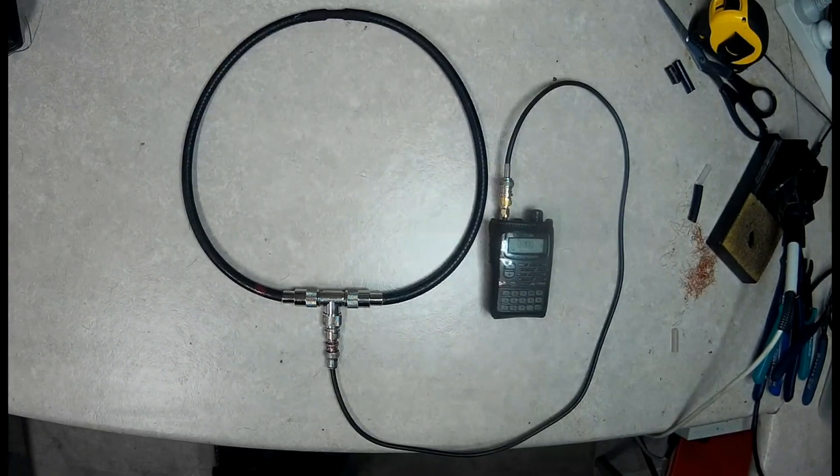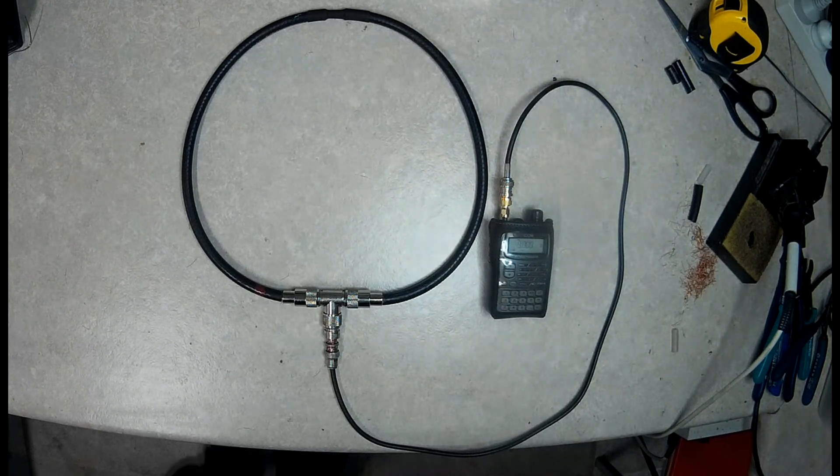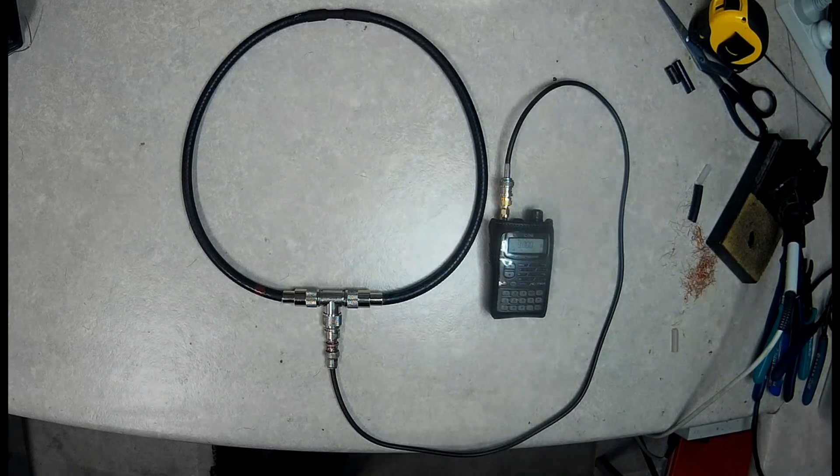Before we can track down any noise source, we need to prepare the tools that will help us. One of the key tools to have for tracking down interference is a simple coax loop antenna connected to a portable receiver. Over the next five minutes, we'll be showing how to build one of these antennas from basic parts.